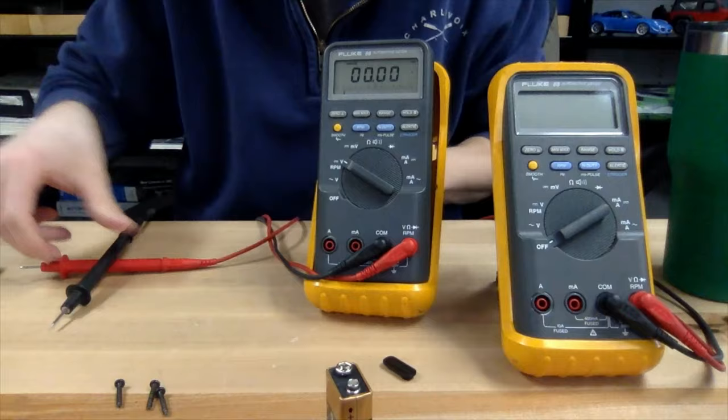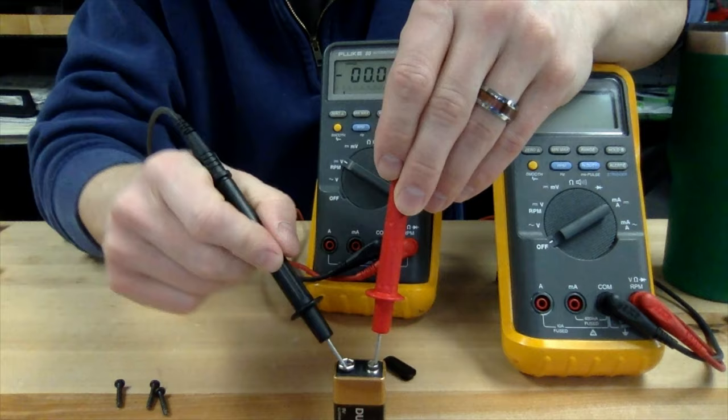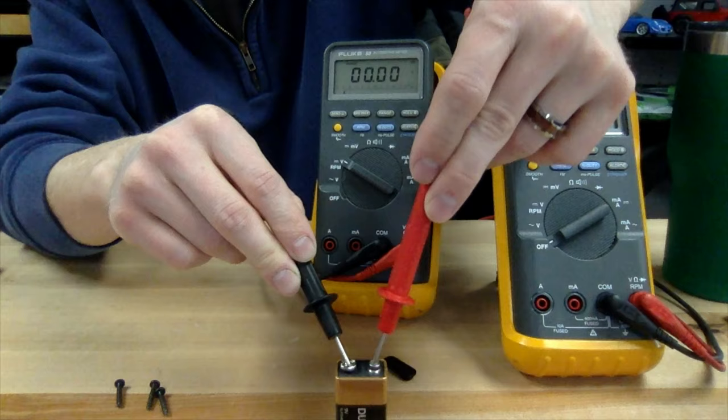I've got the multimeter plugged in. We're checking power on this 9-volt battery, and as you can see, I've got everything hooked up properly and set to voltage DC, but no power being measured. There's no voltage coming out of that battery.